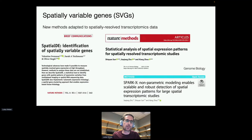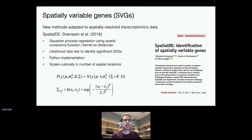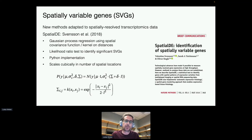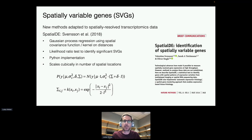Several papers were published recently on this, including SpatialDE, SPARK, and SPARKX. SpatialDE uses Gaussian process regression with a spatial covariance function — a kernel on distances — then a likelihood ratio test to identify significant spatially variable genes. It's a really nice method; however, it scales cubically in the number of spatial locations. With the new 10x Genomics Visium platform with thousands of spatial locations, this becomes quite slow. Our work was on adapting this to scale much faster and apply it to these new platforms.